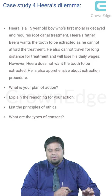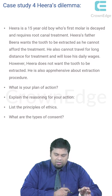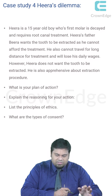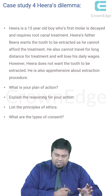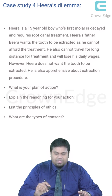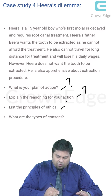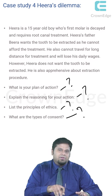Next is a very simple case study about Hira's dilemma. Hira is a 15-year-old boy whose first molar is decayed and requires root canal treatment. Hira's father wants the tooth extracted because he cannot afford the treatment and cannot travel long distances, which would also cause him to lose daily wages. However, Hira does not want the tooth extracted and is apprehensive about the extraction procedure. The questions posed are: what is your plan of action, explain the reasoning, what are the ethical principles involved, and what types of consent apply?